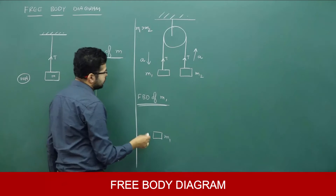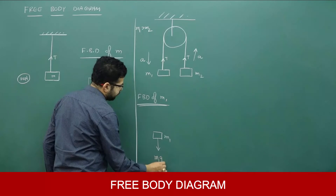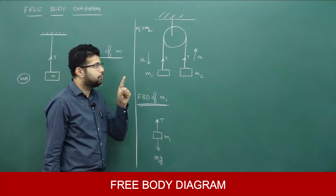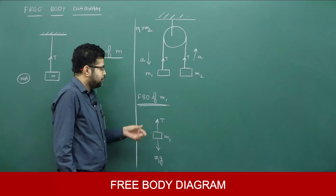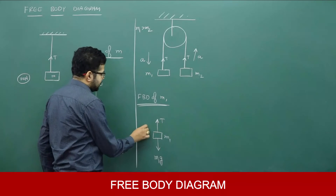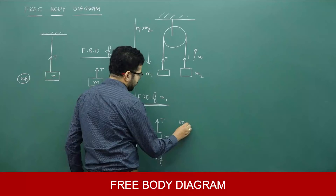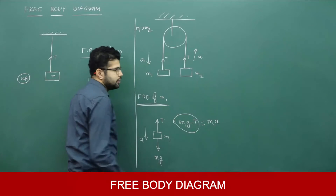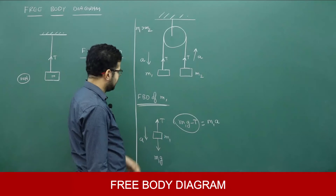For m1, the forces acting are weight m1g downward and tension T upward. Since m1 is coming down, the downward force is bigger, meaning m1g is greater than T. So m1g minus T is responsible for the acceleration of mass m1. The equation is: m1g − T = m1 × a. This net force is responsible for the acceleration.